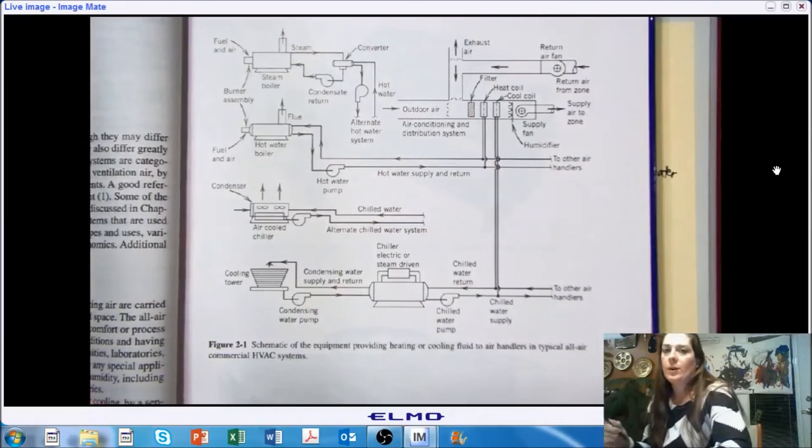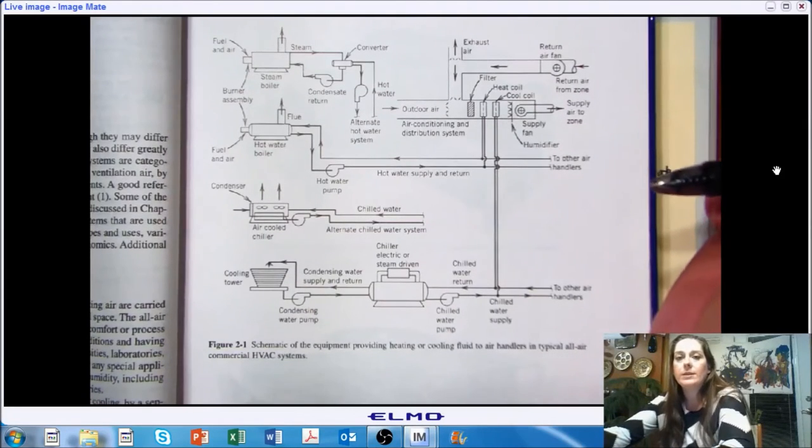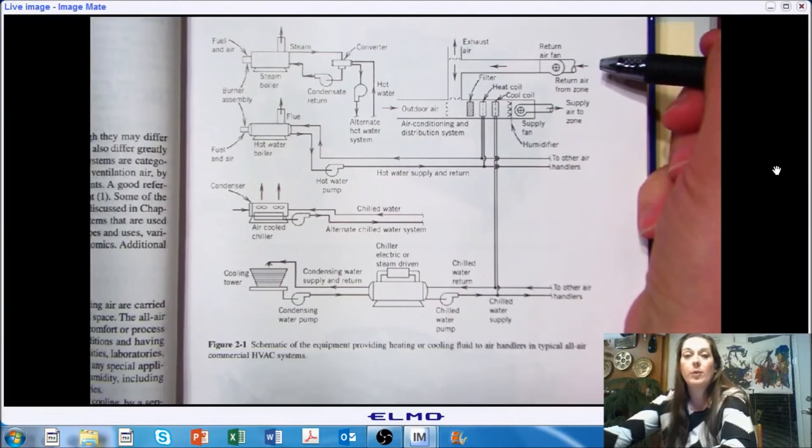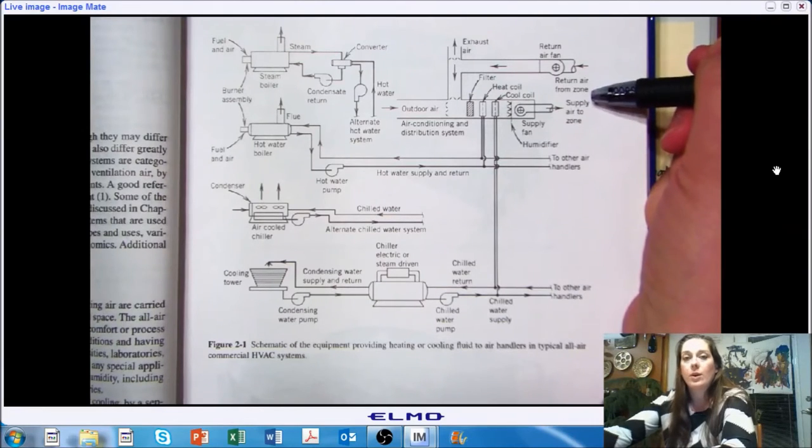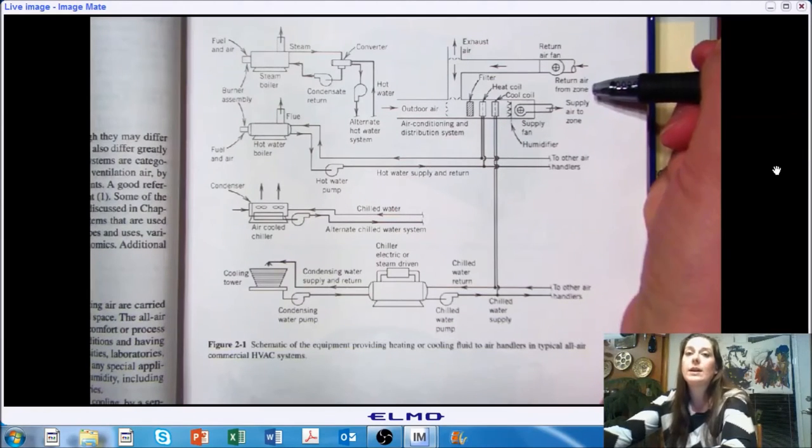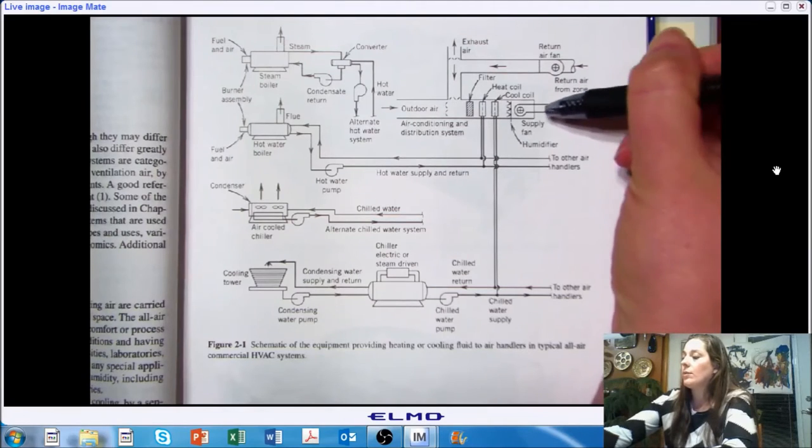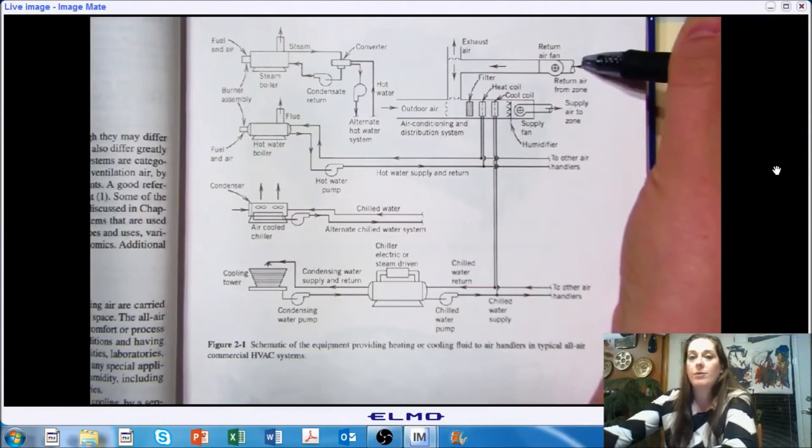Okay. So I want to draw your attention first. We'll start with the supply space. So the space that we want to provide a set point temperature to, for example, is what they're calling our zone. So it might be a room, it might be a series of rooms, it might be a section of a large facility. But we're looking at controlling the air properties within a zone, so a specific place. So we are going to be supplying some air to that zone, and we'll be bringing back air from that zone.